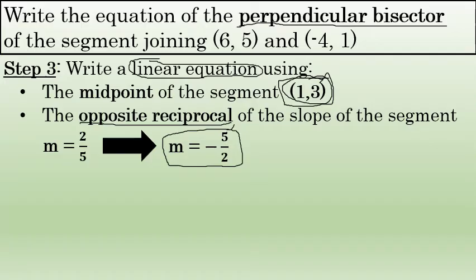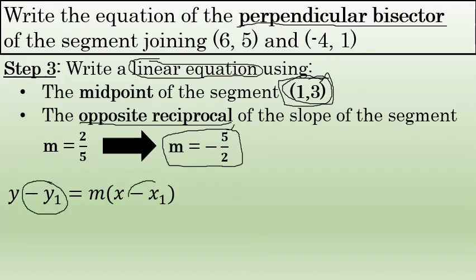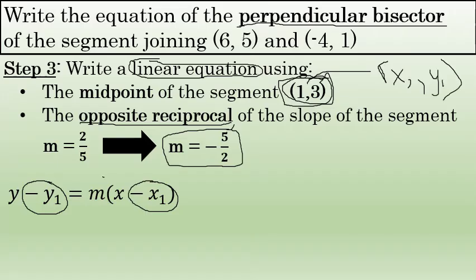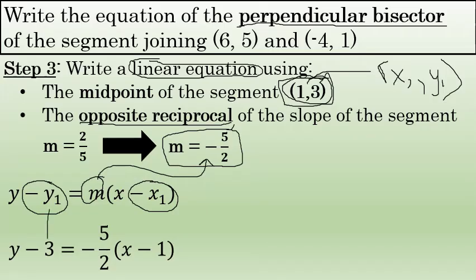I'm going to write that equation because I know a point on the perpendicular bisector and its slope. I'll write the equation using the point-slope formula, which provides a way to write the equation of a straight line if you know an x and y on the line. In this case, 1, 3 will be my x1 and y1, and the slope of the line is negative 5 halves. Substituting 1, 3 for x1 and y1 and substituting negative 5 halves for the slope gives me the equation of the perpendicular bisector.